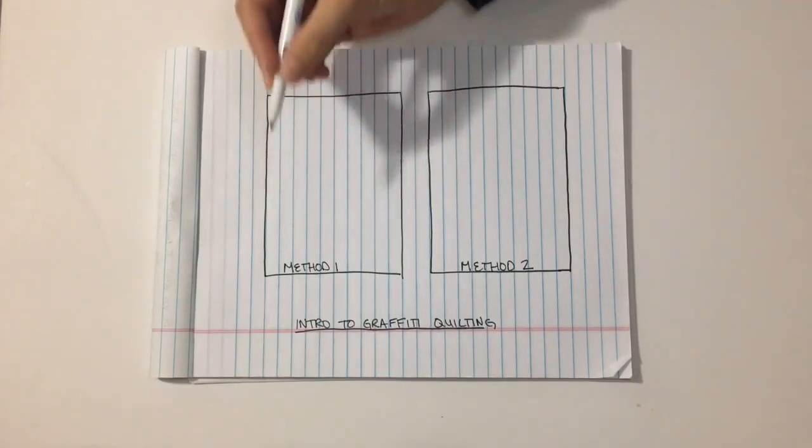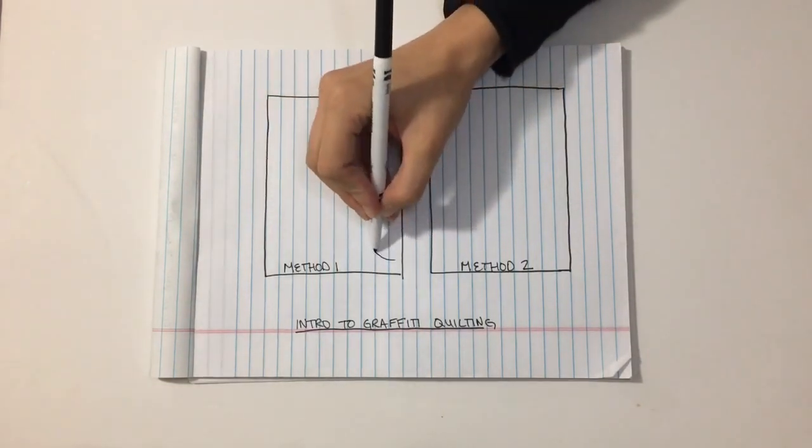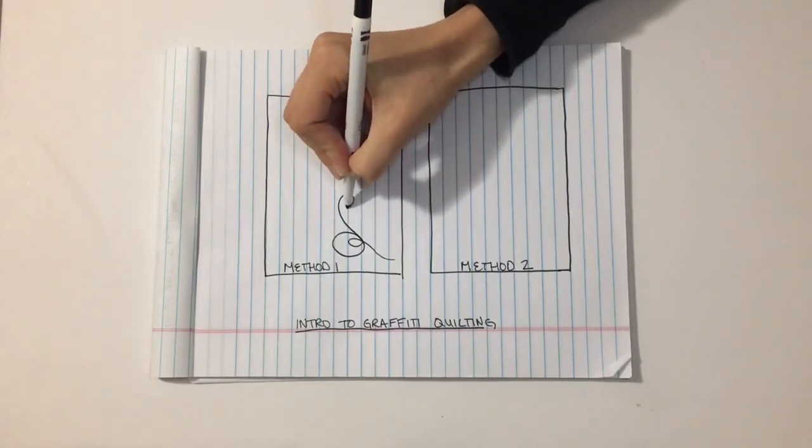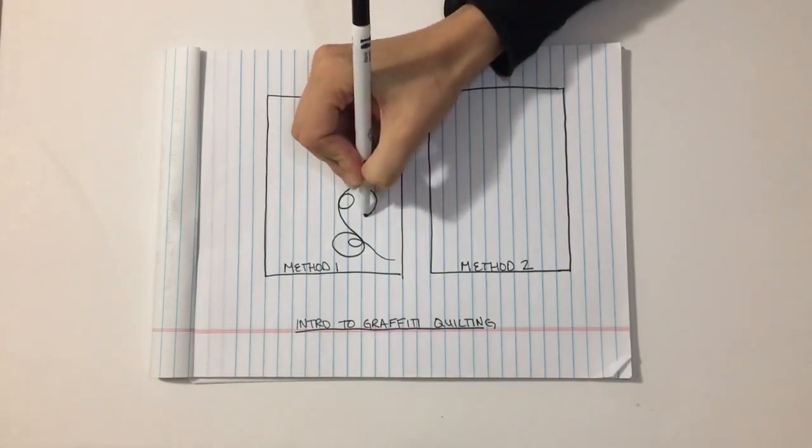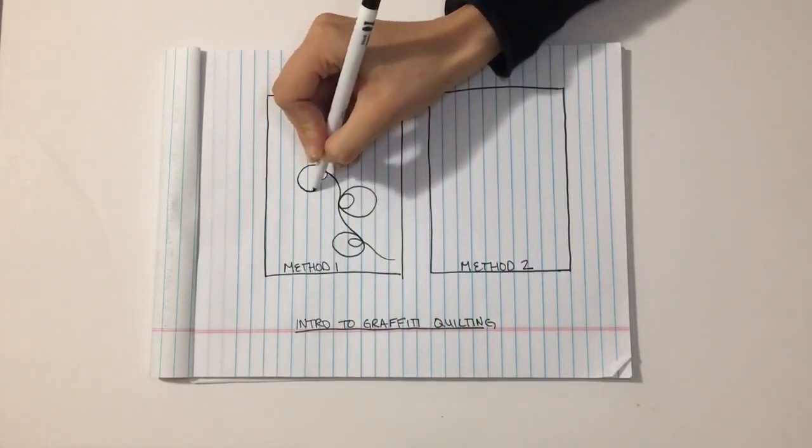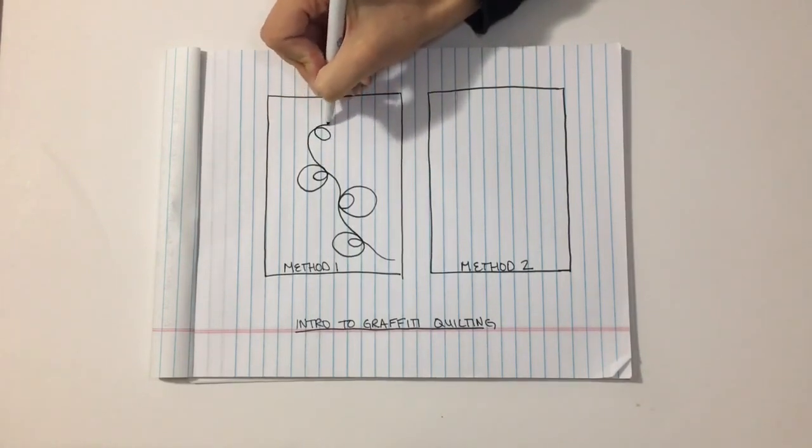The first method of graffiti quilting that I would like to teach you is where I began. And rather than simply going into an area of quilting and going crazy, this is a good way to kind of introduce yourself. So I start with a double loop design. This works particularly well in borders, but you could really do it in any area of quilting.